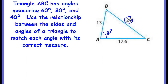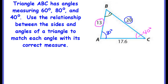The smallest side is side AB. The vertex that this side does not touch is angle C. So angle C is opposite the 13 — this is the smallest side, so angle C is the smallest angle, which is 40 degrees. That means the middle side, 17.6, is opposite angle B. So this would be the middle angle, which is 60 degrees.